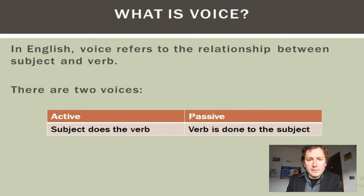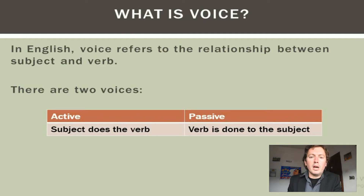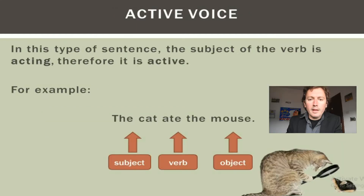In an active sentence, the subject is doing a verb. In a passive sentence, the verb is being done to the subject. Let's look at an example. We're going to take a simple sentence, but I think it illustrates quite well how this works. In this active voice sentence: